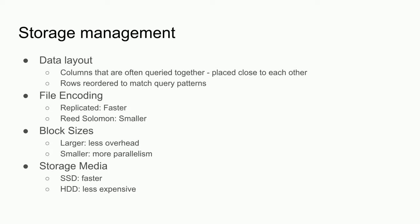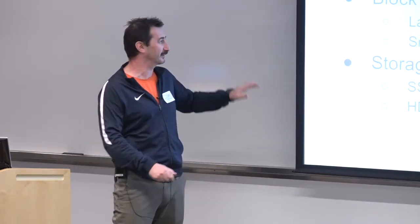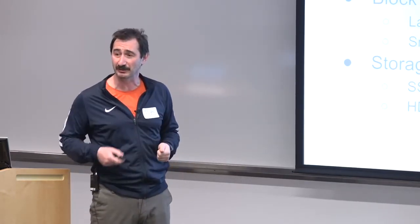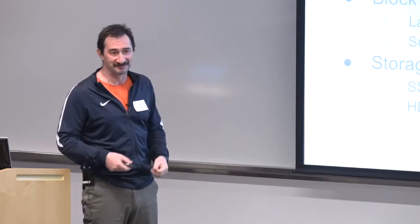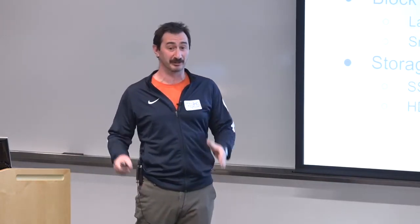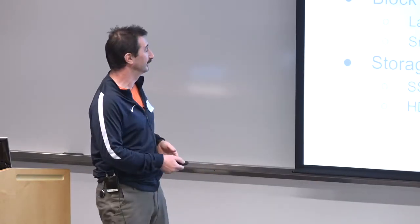Storage optimization includes reordering columns if they're queried together, reordering rows, picking best encoding — Salomon or replicated. BigQuery takes into account historic query patterns and how data is actually used. Though the PMs would want me to say we use ML to do this, we use algorithms. Since everything is immutable, we get time travel for free. SQL has the FOR SYSTEM TIME AS OF clause — you can see how a table looked in the past, or show data added in the last 30 minutes.